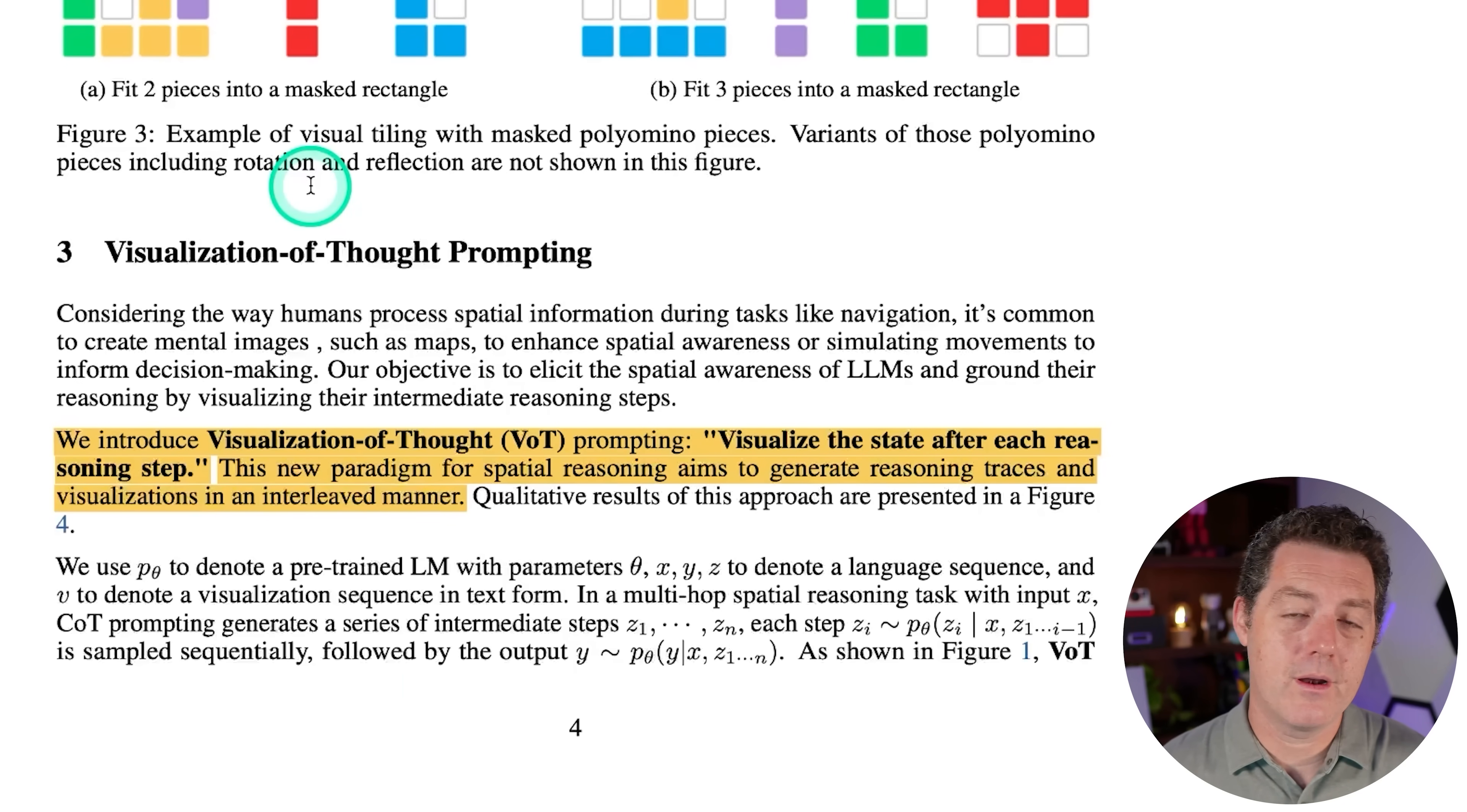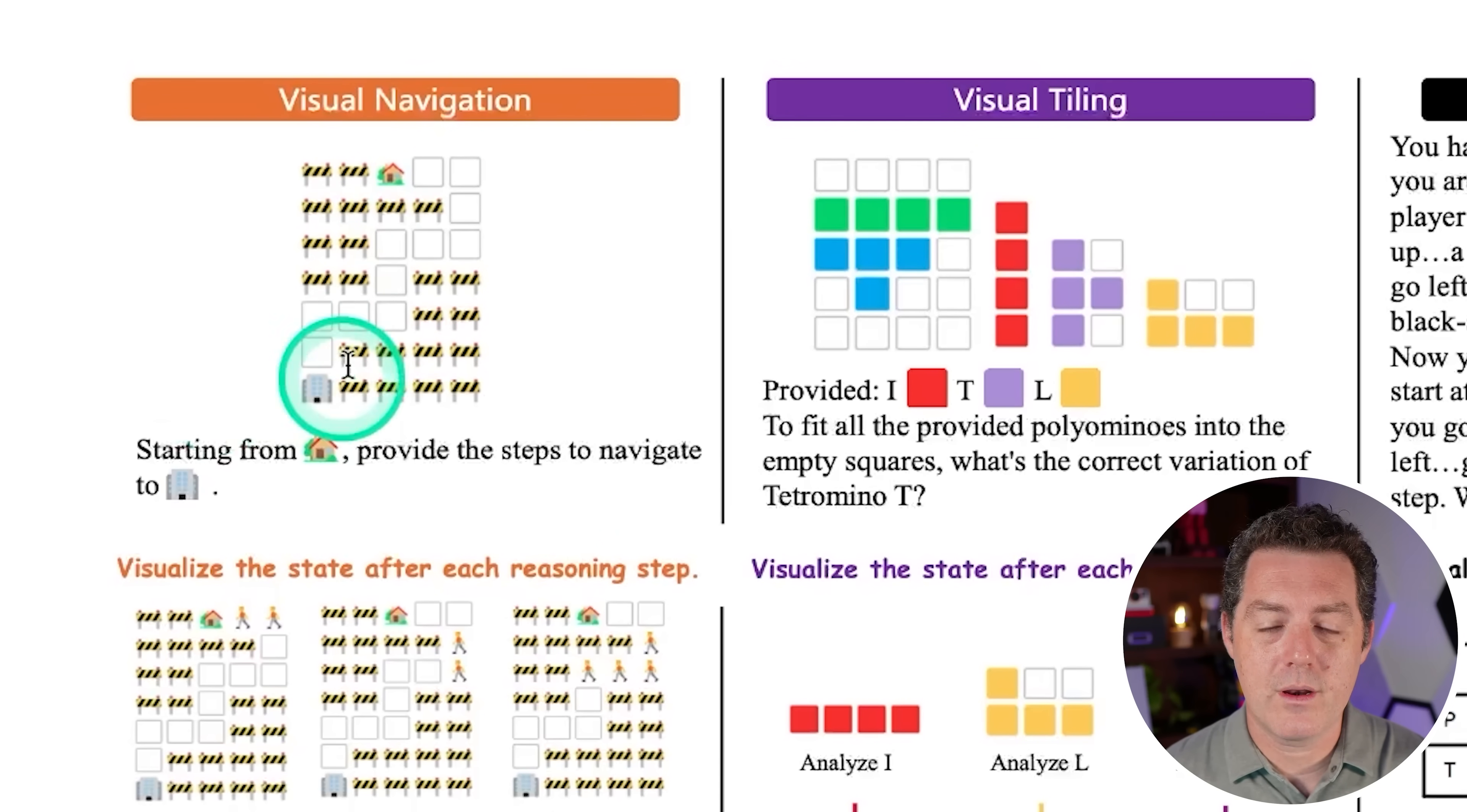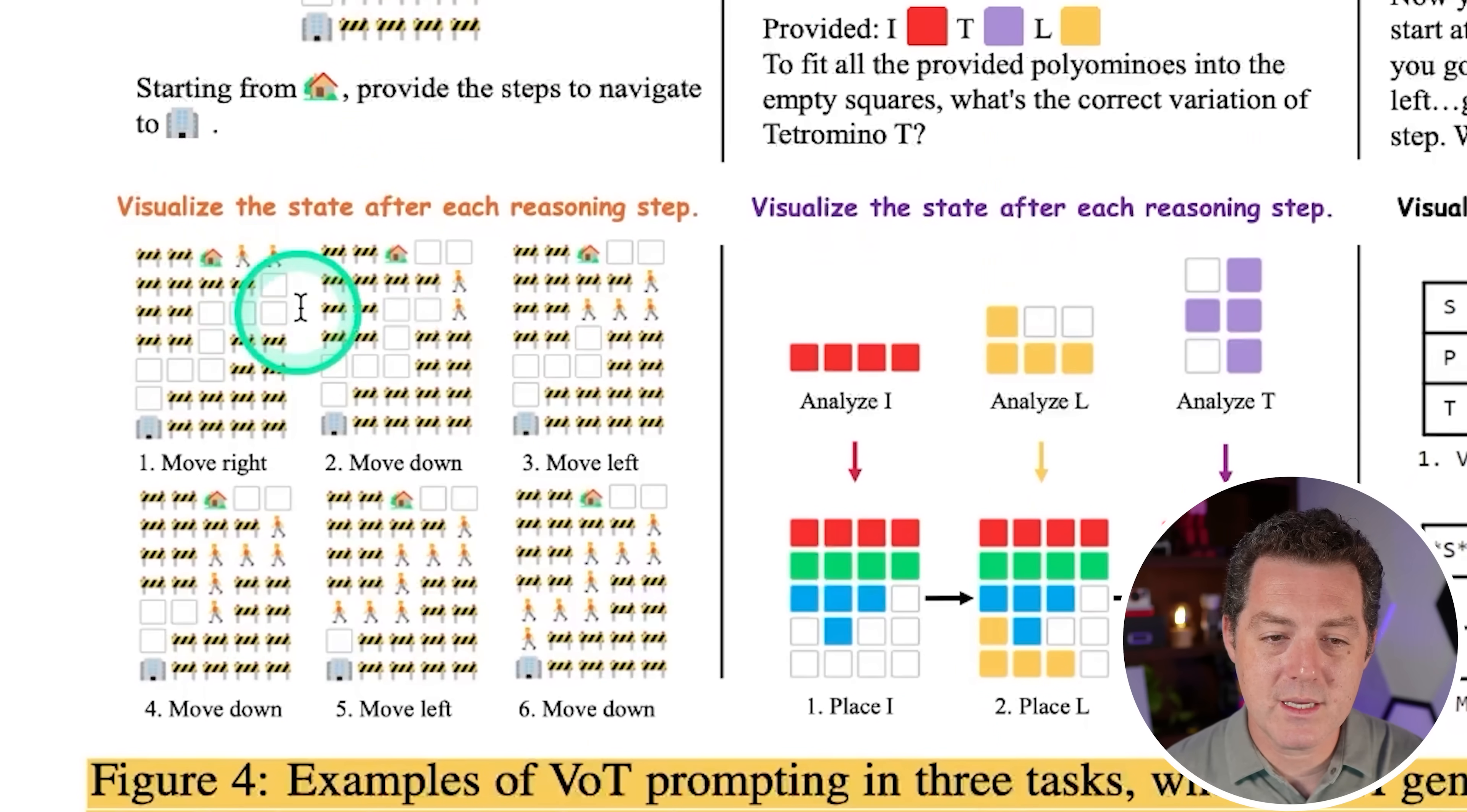Now, the really important part of VOT prompting is visualizing at each step. So it's kind of like chain of thought. We're not just saying, okay, do it all at once. It's I want to see a trace of the path step by step as you go along the way. So we introduce VOT prompting, and it just starts really simply visualize the state after each reasoning step. This new paradigm for spatial reasoning aims to generate reasoning traces and visualizations in an interleaved manner. So let's look at the one on the left first. So this is visual navigation. We've already seen this. So we have the house right here, and the LLM is supposed to navigate through all of these empty squares. So the ones with gates in them cannot be navigated through all the way down to the office. And what we're seeing down here is the LLM doing that and doing it step by step. So step one, move right. Step two, move down. Step three, move left, move down, move left, move down. And they reached it.